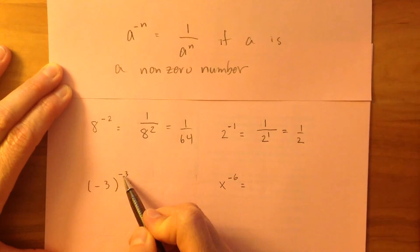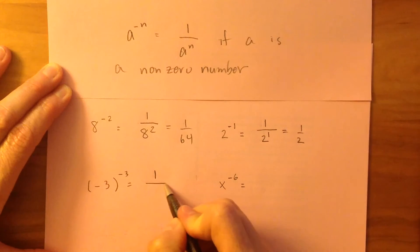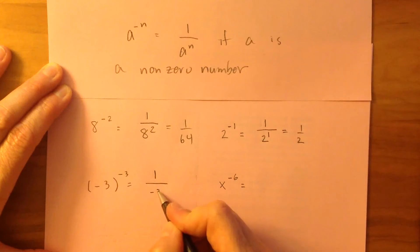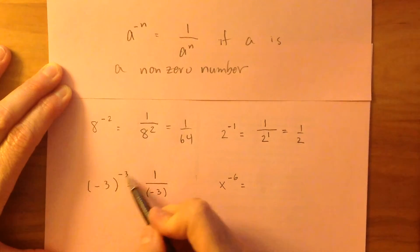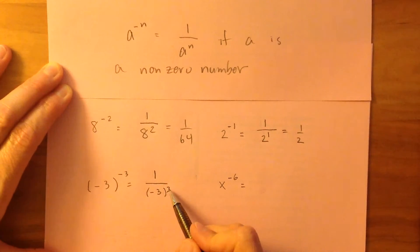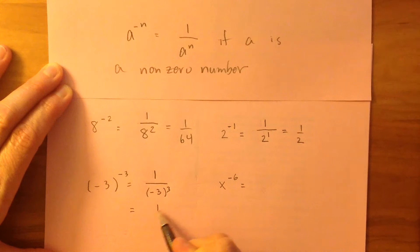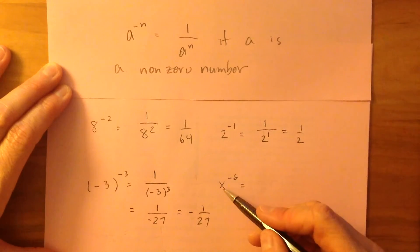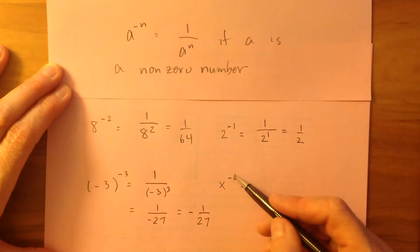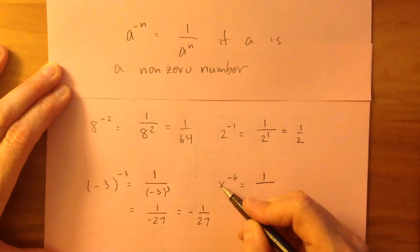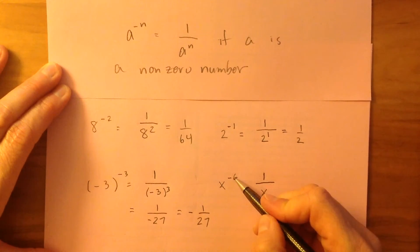Negative 3 to the power of negative 3: I'm going to have 1 over, I'm going to keep my same base of negative 3, but the power is going to become positive 3. So I have 1 over negative 3 to the power of 3, and so that's going to be 1 over negative 27, which is just equal to negative 1 over 27. And x to the power of negative 6 — I'm going to rewrite this so that my power is positive, so it's going to be 1 over x to the power of positive 6.